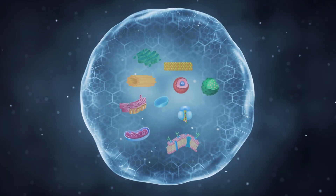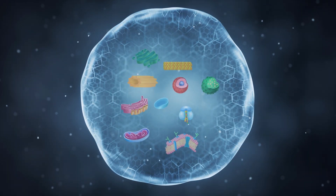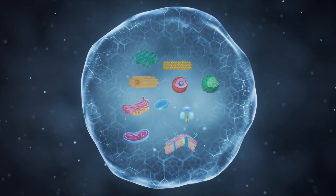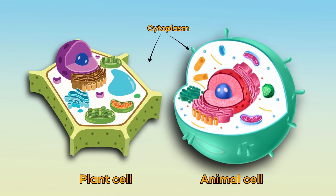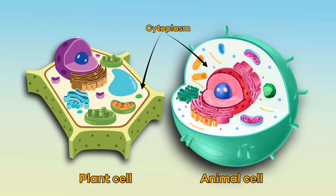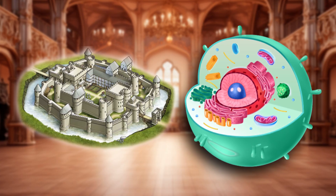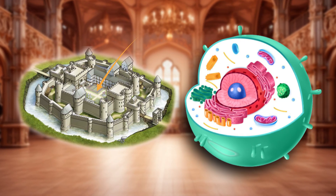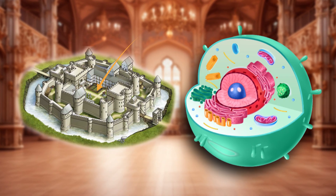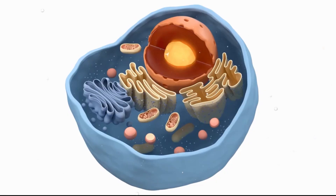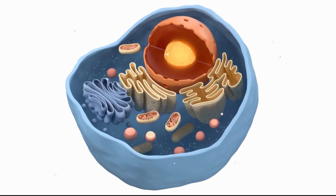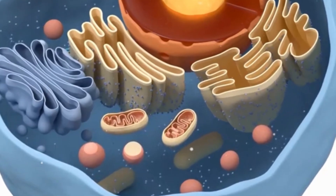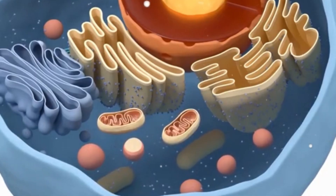Inside the cell, all of the organelles float around in a gel-like substance called cytoplasm. The cytoplasm is like the courtyard or inner grounds of a castle. This is where all of the important events take place and all the organelles interact with each other.